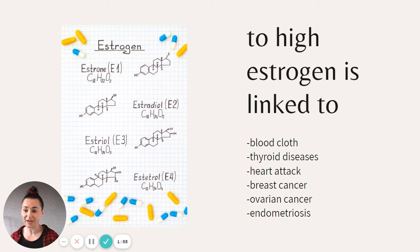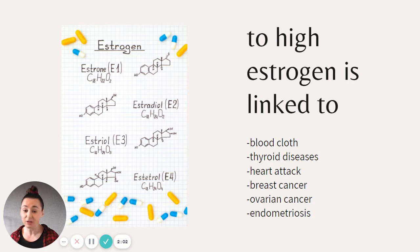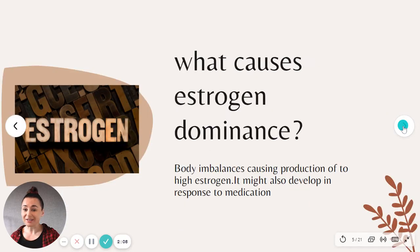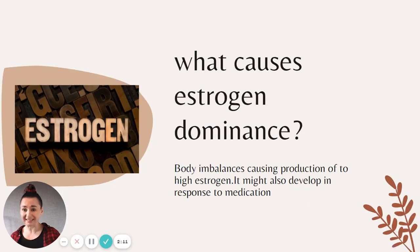Too high estrogen is also linked to other serious illnesses, for example: polycystic ovary syndrome, blocked fallopian tubes, thyroid diseases, heart attack, breast cancer, and ovarian cancer. As you can see, so many illnesses can be caused by estrogen dominance.